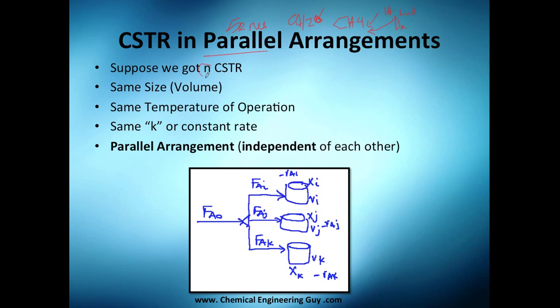Suppose we got n CSTRs - so many CSTRs, at least two of course but let's say many CSTRs. They have the same size, same volume, the same temperature of operation, the same k or constant rate, and they are arranged in parallel. What does that mean? You have one flow, let's say 90, and then suddenly you get into three pipes which have the same size, same friction factor, and eventually you get 30 here, 30 here, and 30 right here.